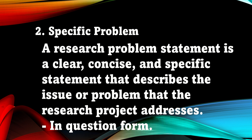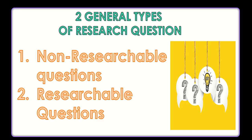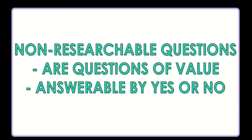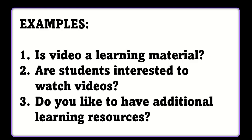The second part is the specific problem. A research problem statement is a clear, concise, and specific statement that describes the issue or problem the research project addresses, and it is written in question form. Before looking at examples, let's examine the types of research questions — non-researchable questions and researchable questions.